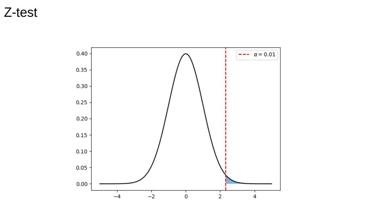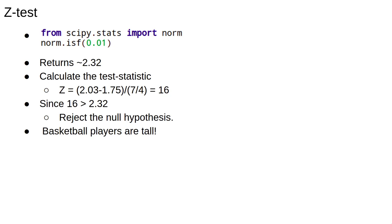For our chosen value of alpha, we want to know the value of z such that the area in blue is less than 0.01. One way to find this is to use the scipy stats function ISF, which stands for inverse survival function. This is a function which takes significance values and finds the point at which the area under the curve is equal to alpha. Executing the code shown should return 2.32.